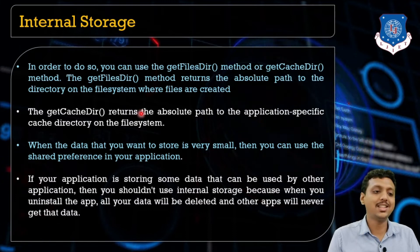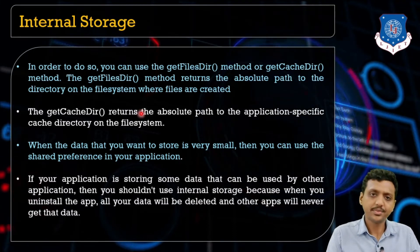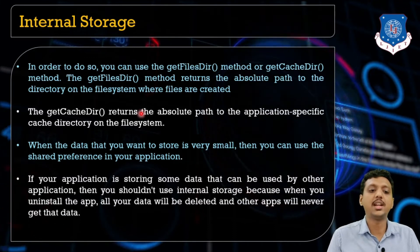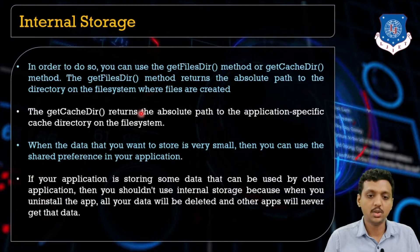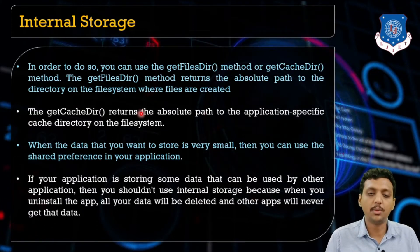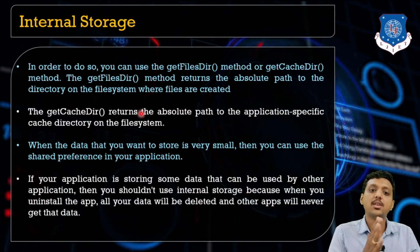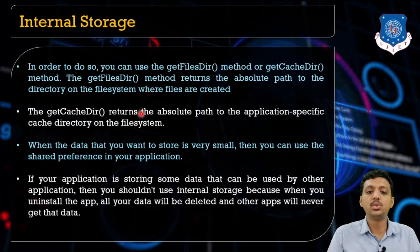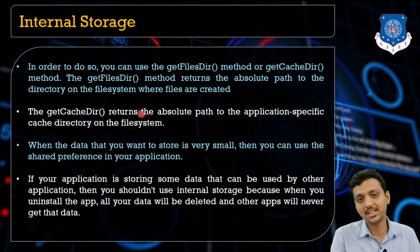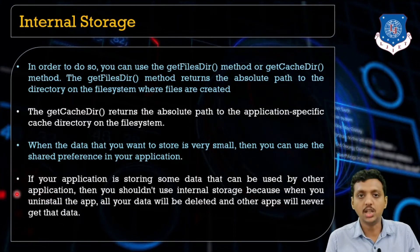To access files in internal storage, there are two functions. One is getFilesDir() and the other is getCacheDir(). getCacheDir() returns the absolute path of the cache file you have created, and getFilesDir() gives you the absolute path of the directory of the file system where the files are created.